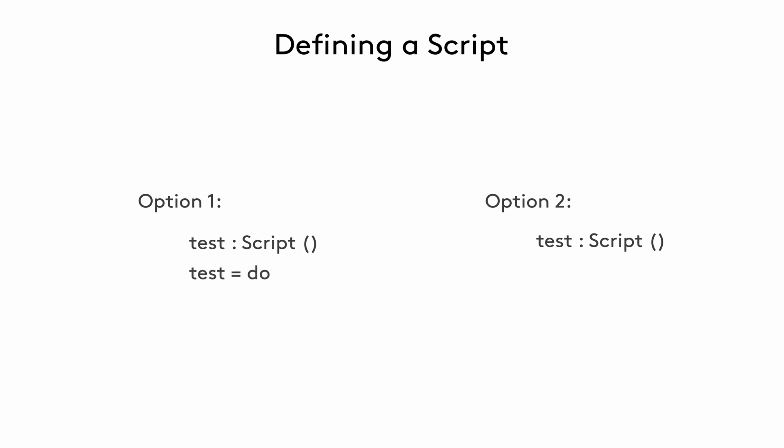Then we can either open up a do block, or use the helper script for readability and then open a do block. Either way works perfectly fine. We can also omit the script signature, as DAML will notice the do block and understand that we're constructing a script through type inference.